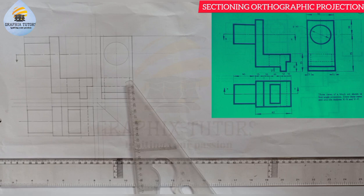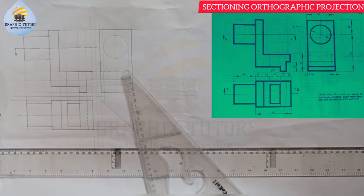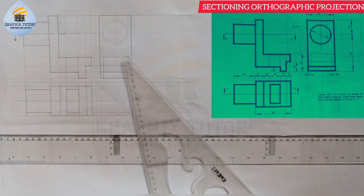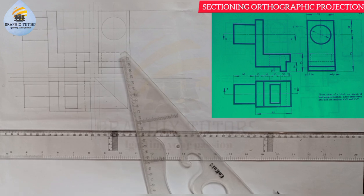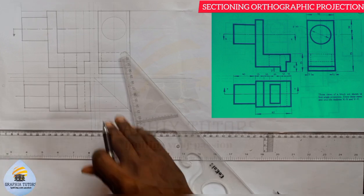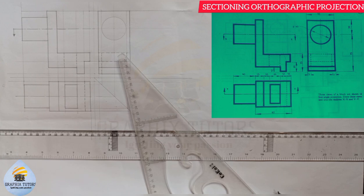Let me adjust this so we have a better view of what we have. I'm going to draw this in isometric so that we'll have a better understanding of what happens when you section it. Stay tuned and watch — this is what we have here.